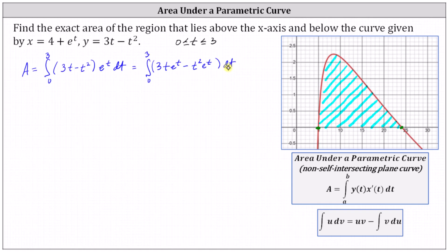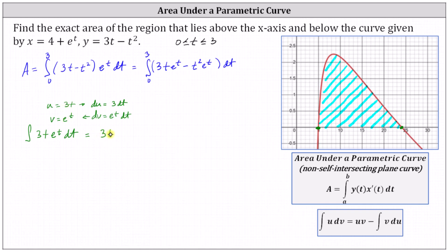We need to apply integration by parts to integrate three t e to the t, and for t squared e to the t we need to apply integration by parts twice. Let's first consider the integral of three t e to the t dt. We set u equal to three t and dv equals e to the t dt. Differentiating, du equals three dt; integrating, v equals e to the t. Applying integration by parts gives u times v, which is three t e to the t, minus the integral of v du, which is the integral of three e to the t dt. The final antiderivative is three t e to the t minus three e to the t plus C.